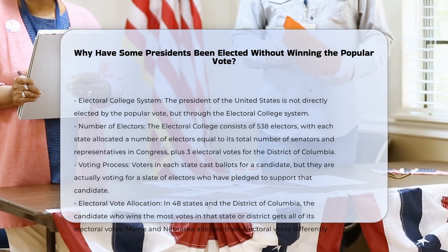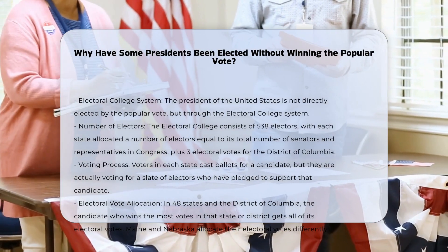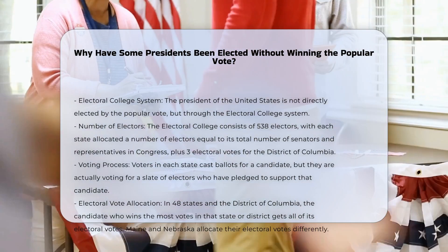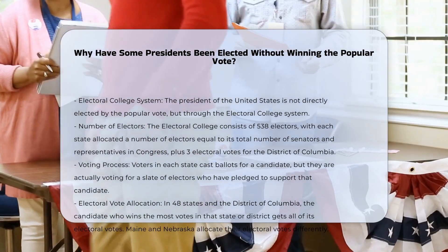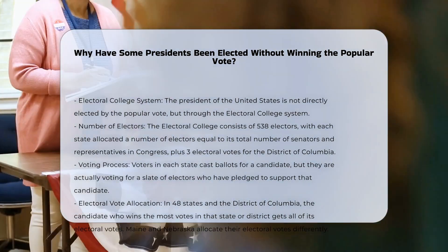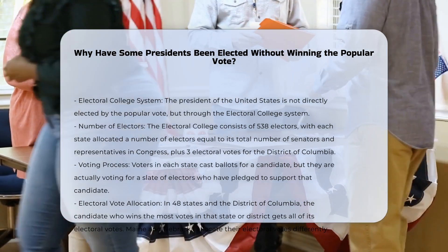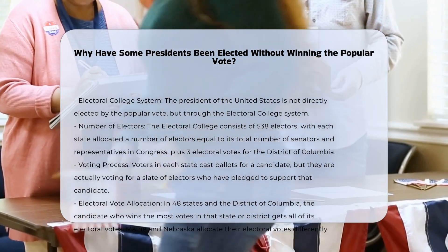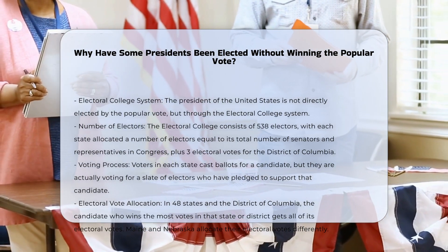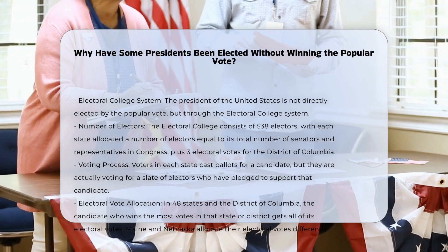In the United States, the president is not directly elected by the popular vote. Instead, the Electoral College system determines the outcome of presidential elections. The Electoral College consists of 538 electors, with each state allocated a number of electors equal to its total number of senators and representatives in Congress. Additionally, the District of Columbia has three electoral votes.